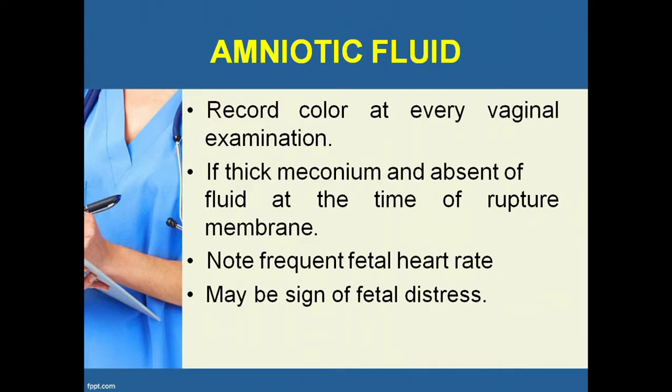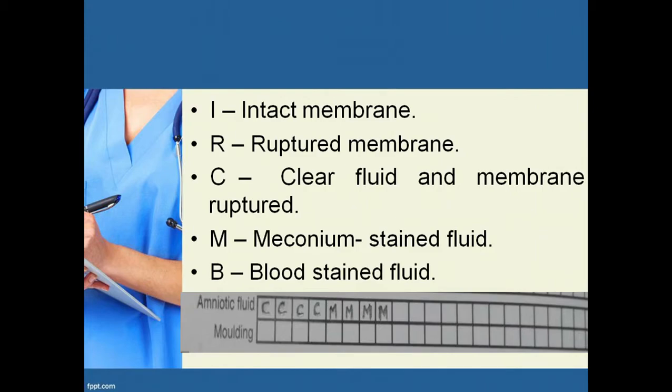Amniotic fluid: record the color at every vaginal examination. If there is thick meconium or absent fluid, note the time of rupture of membrane, as the frequency of abnormal fetal heart rate may be a sign of fetal distress. 'I' means intact membrane, 'R' means ruptured membrane, 'C' means clear fluid with membrane ruptured, 'M' means meconium stained, and 'B' for blood-stained.